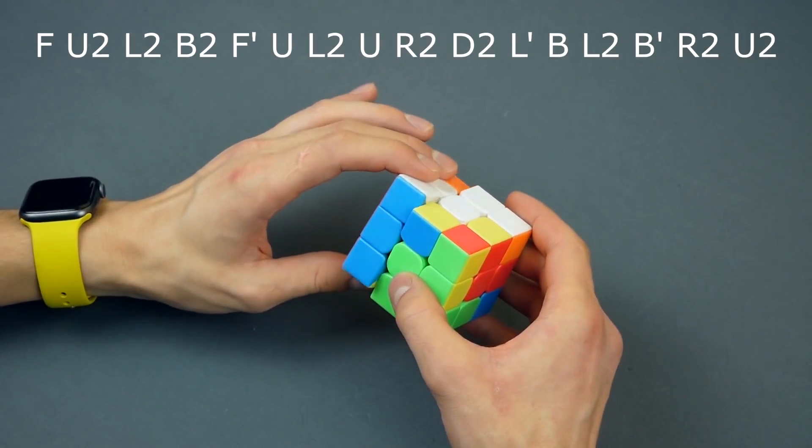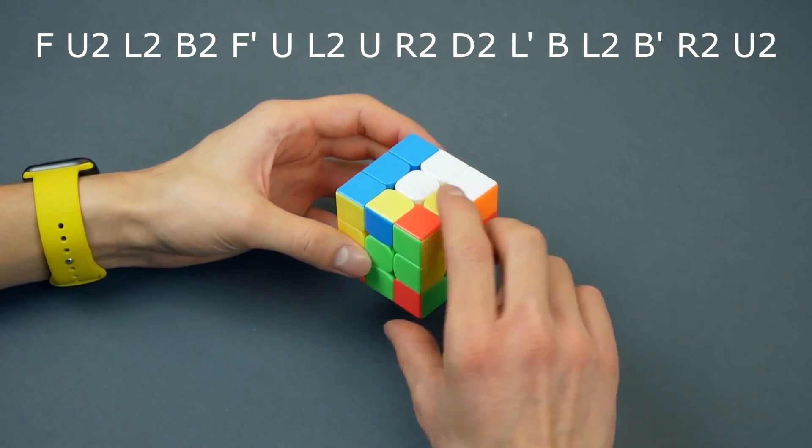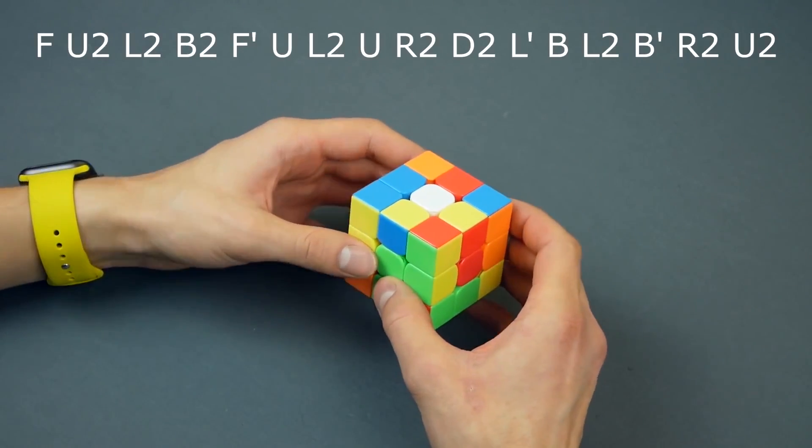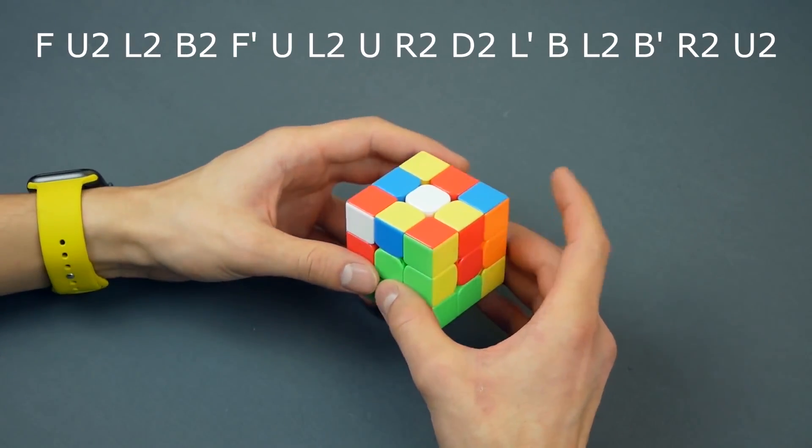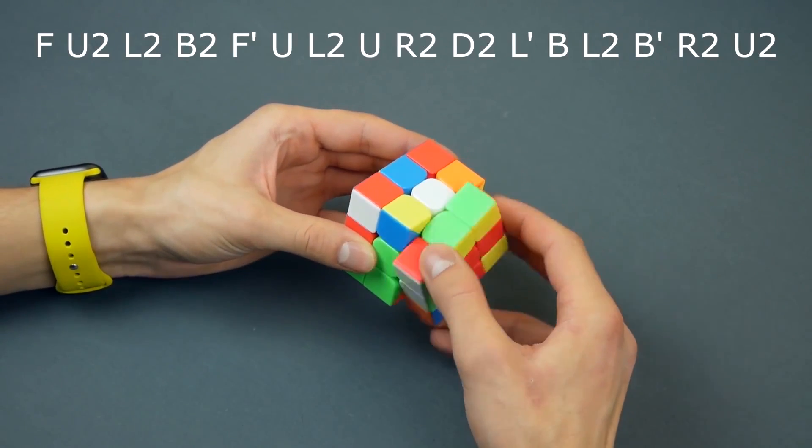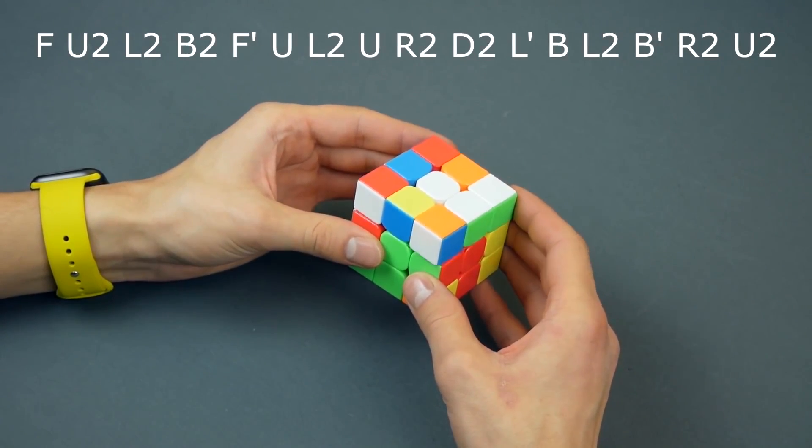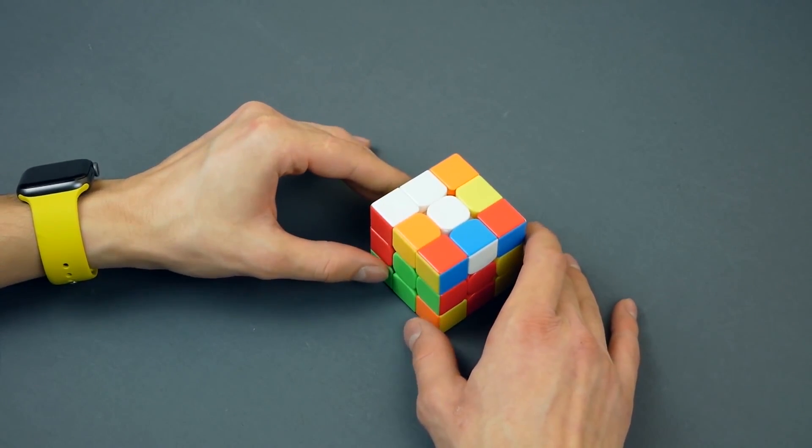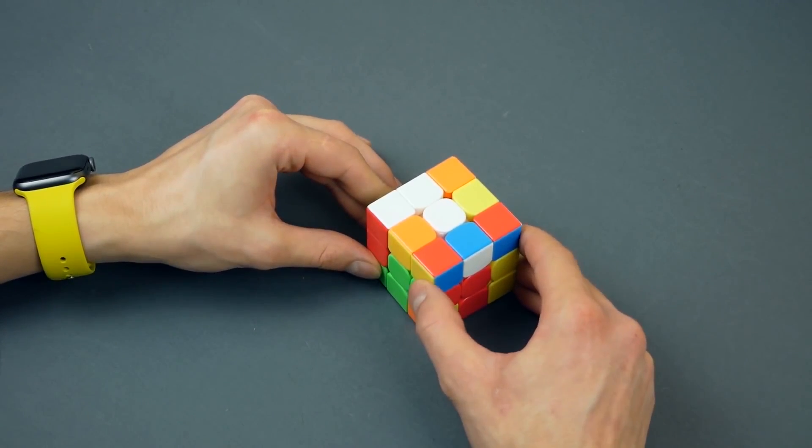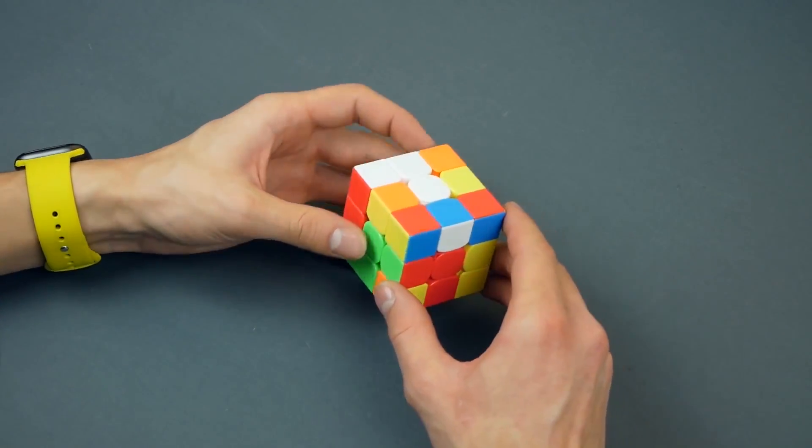Left counter clockwise. Back clockwise. Left two times. Back counter clockwise. Right two times. And up two times. Who couldn't catch up with me, don't worry. The scramble algorithm is in the description, as well as the solving reconstruction, so head there.